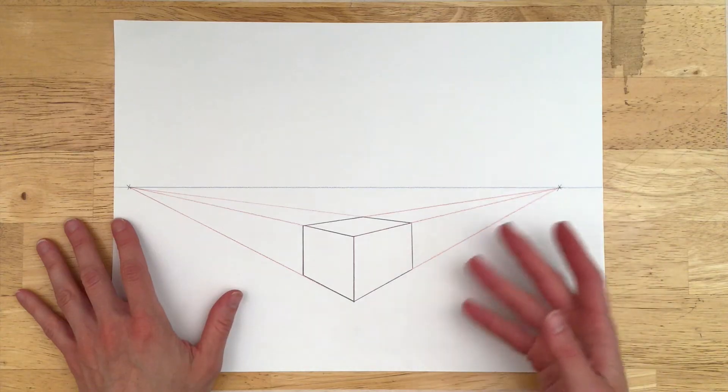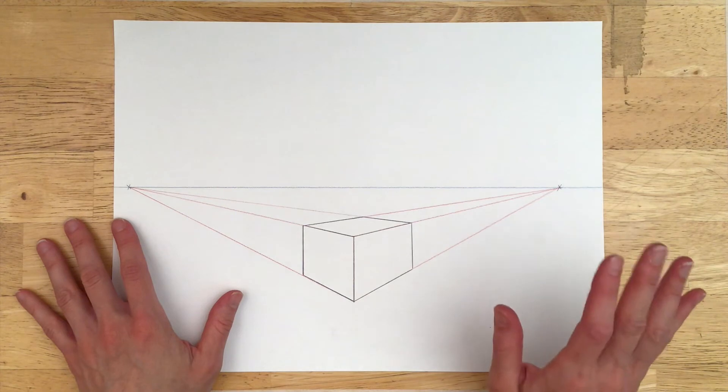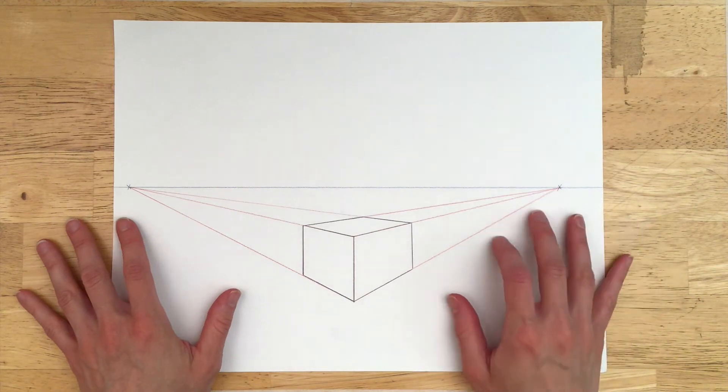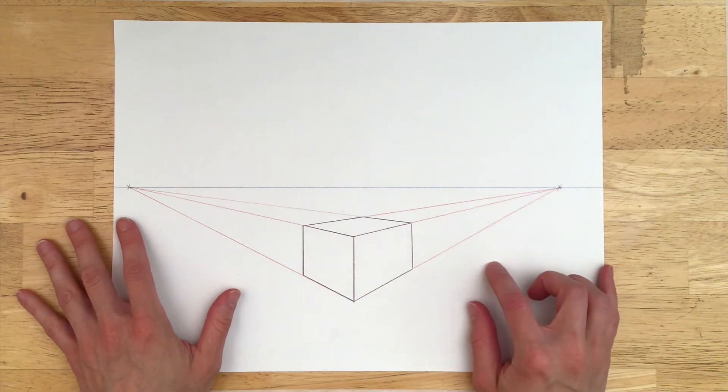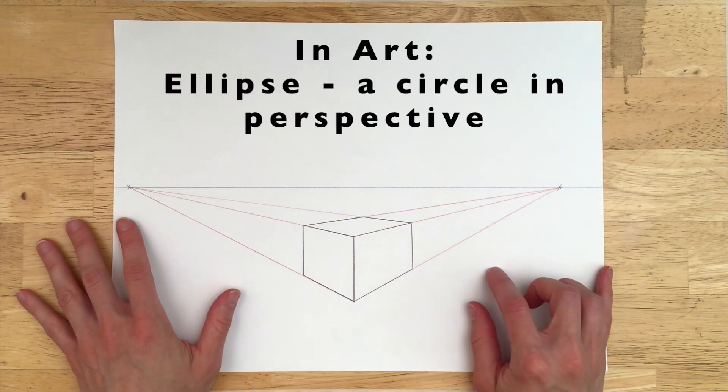By now you should know how to draw a box in perspective from previous tutorials. To turn those boxes into geometric forms, you need to be able to draw an ellipse. In art, an ellipse is defined as a circle in perspective.